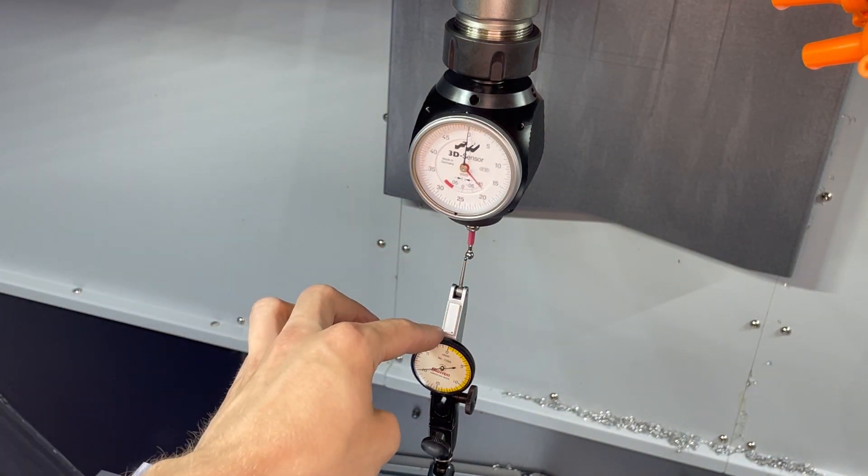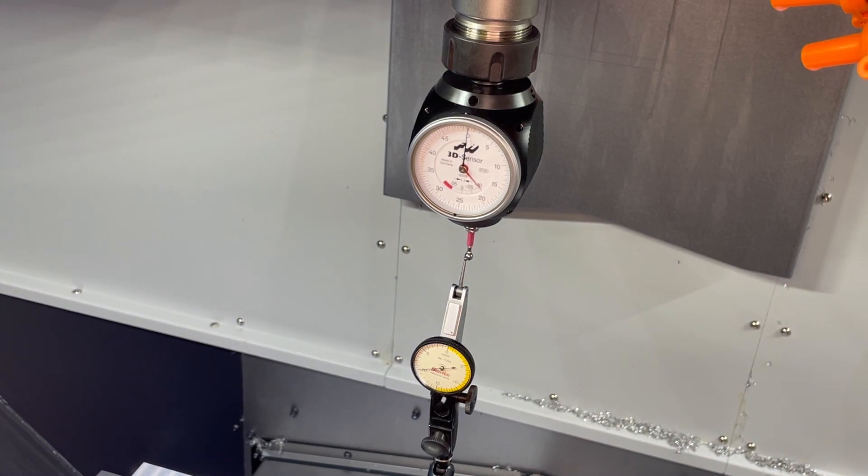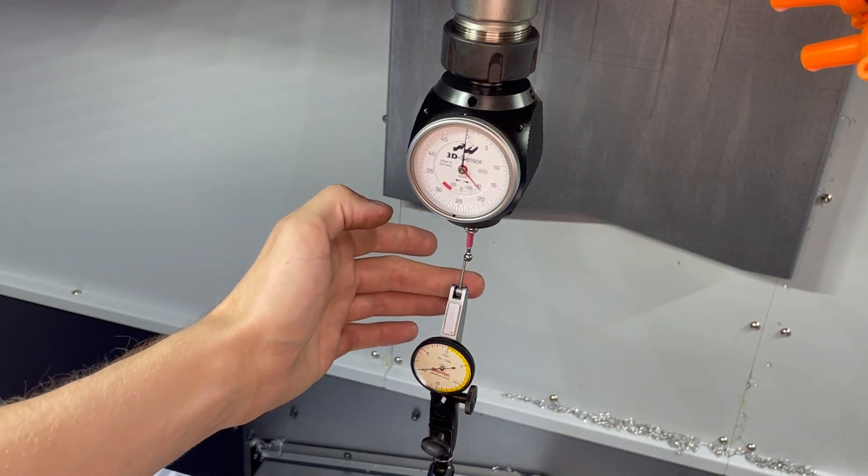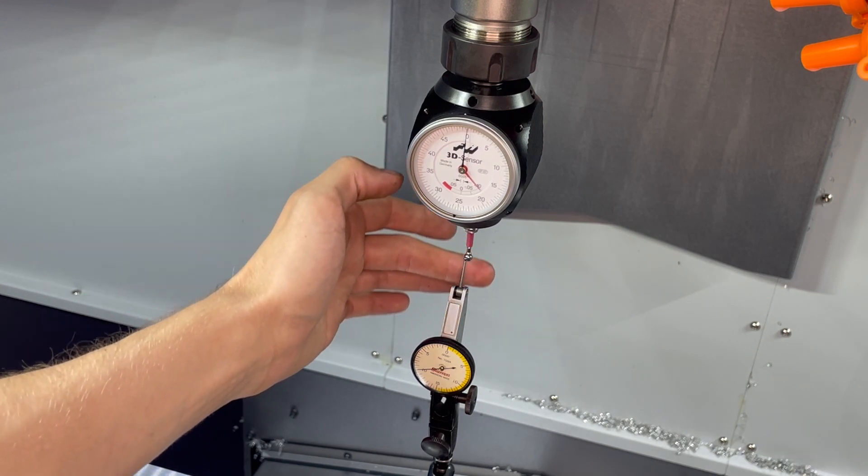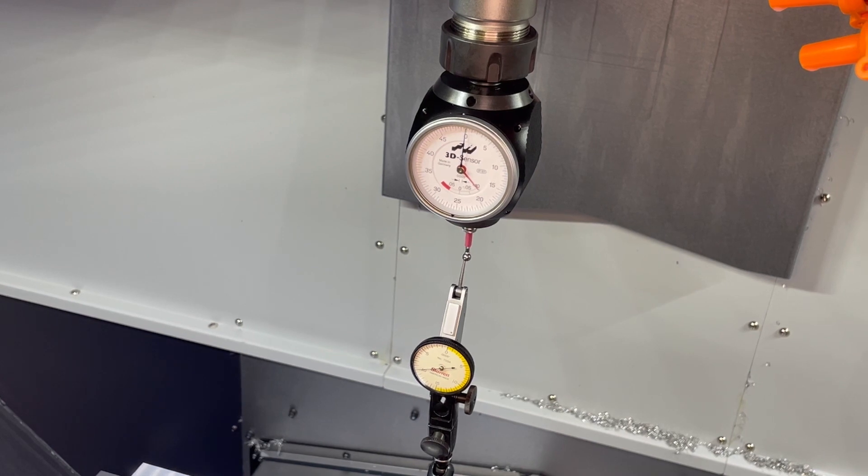To do that all we're going to do is jog the Y-axis until we see some movement on the indicator on the bottom down here. You want to set the indicator at about a five to ten degree angle, otherwise you'll have sine error.